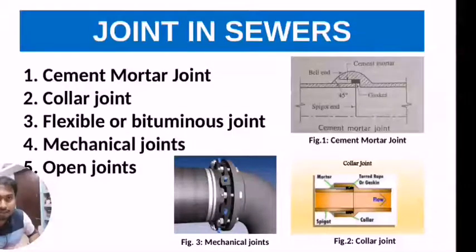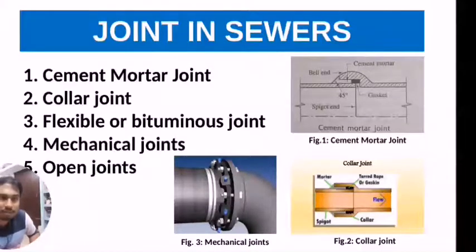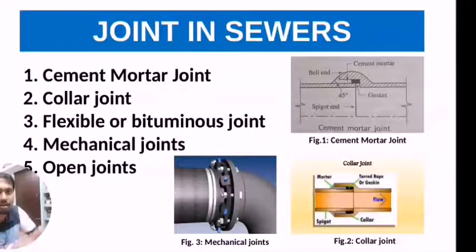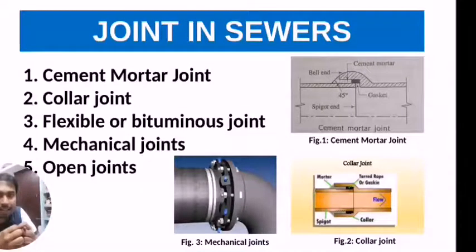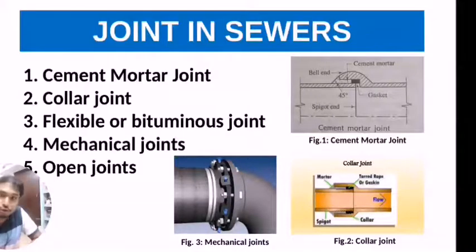In the collar joint, a slightly bigger diameter ring is placed over the two ends of the sewer pipe, and the annular space between the collar and the end of the sewer is filled with cement mortar in a 1:1 proportion.